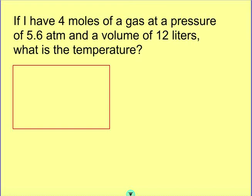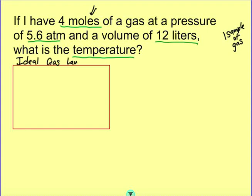This problem says, if I have 4 moles of a gas at a pressure of 5.6 atm and a volume of 12 liters, what is the temperature? This one is dealing with one sample of gas. Nothing's changing. It's talking about the number of moles. That cues us off that it is an ideal gas law problem.